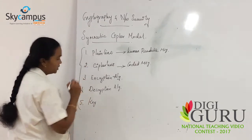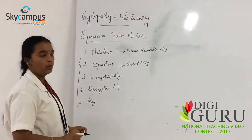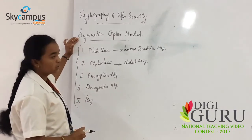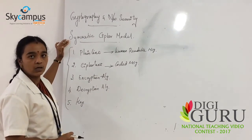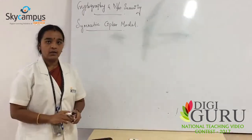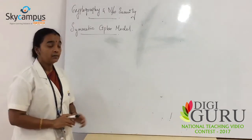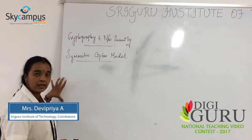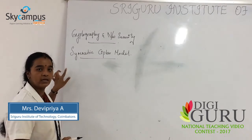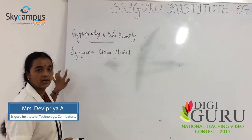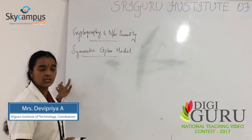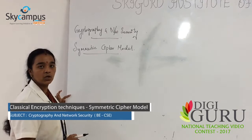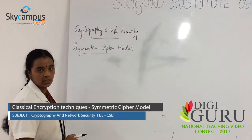These five terms we need to know before entering into the Symmetric Cipher Model topic. The Symmetric Cipher Model has five ingredients: Plaintext, Ciphertext, Encryption Algorithm, Decryption Algorithm, and Key.